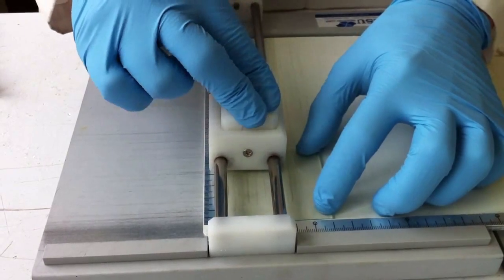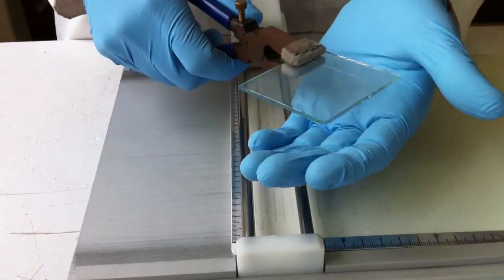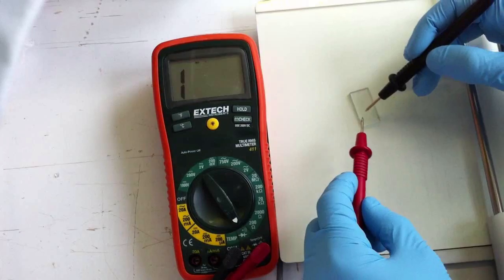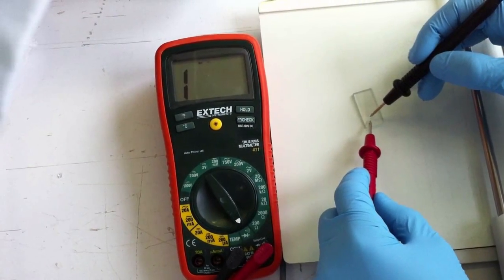The first step in our cell assembly is to cut the optically transparent electrode to the appropriate size. Next, we test our electrode for conductivity.